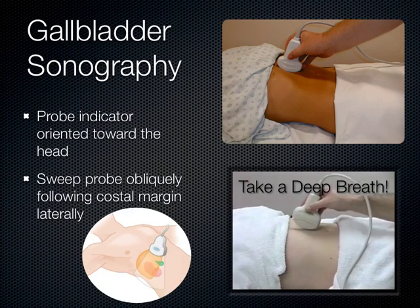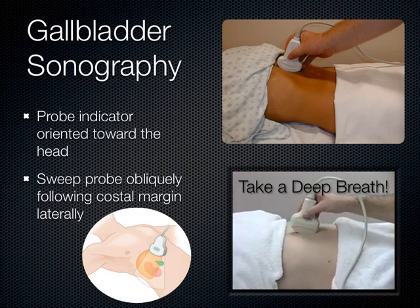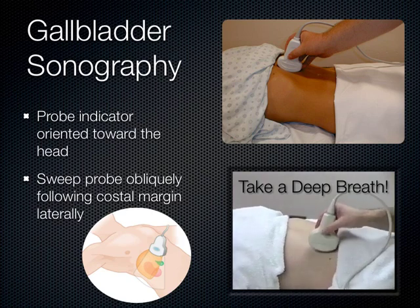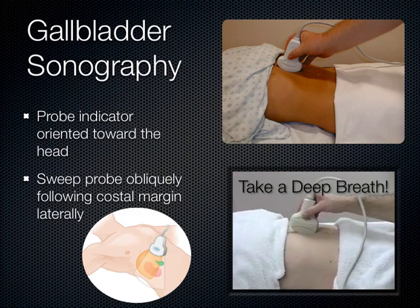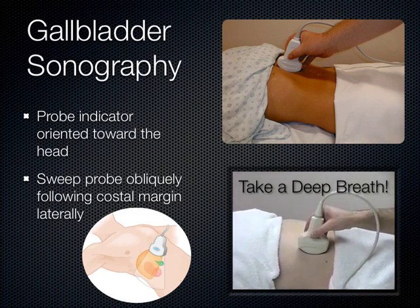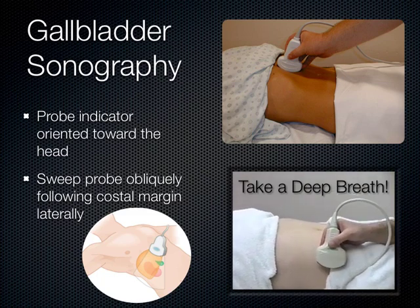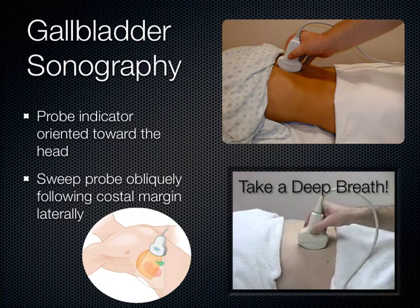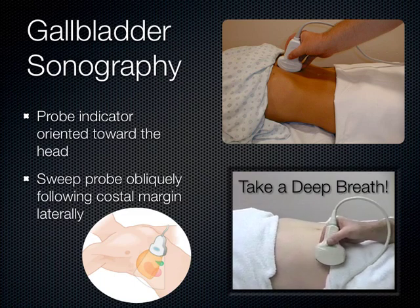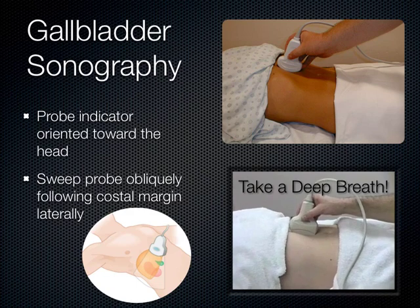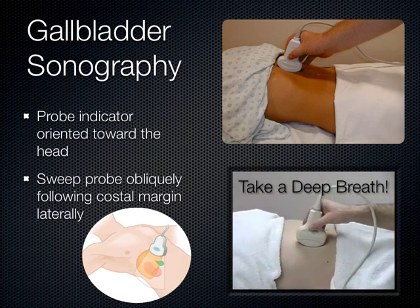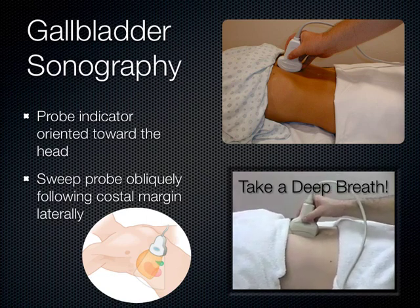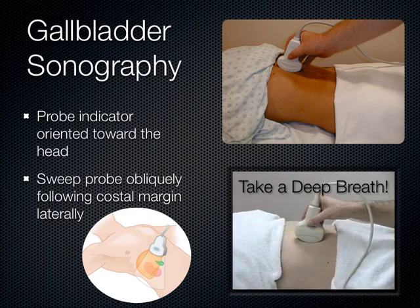Moving on now to the gallbladder — gallbladder ultrasonography 101. You perform a subcostal sweep: take the indicator, aim it toward the patient's head, have the patient take a deep breath, and follow along the costal margin. Feel your ribs where they end at your xiphoid process — your costal margin becomes more prominent when you take a deeper breath. The patient takes a deep breath and you slide right along that inferior costal margin. There are so many anechoic structures on screen that you need a landmark to identify the gallbladder.